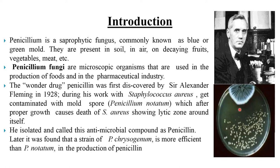The wonder drug penicillin was first discovered by Sir Alexander Fleming in the year 1928 during his work on Staphylococcus aureus, which got contaminated with the mold spore of Penicillium notatum. After proper growth, it caused death of the Staphylococcus aureus, showing a lytic zone around itself. He isolated and called this antimicrobial compound as penicillin.